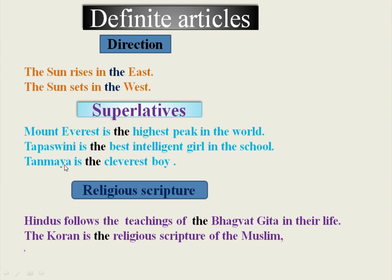'Tanmaya is the cleverest boy' — 'cleverest' is the superlative degree. We also use the definite article before religious scriptures. Every religion has its own scriptures. Hindus have the Puranas, Vedas, and Bhagavad Gita. Muslims have the Koran. Christians have the Bible. Sikhs have the Guru Granth Sahib. We use the definite article before all names of religious scriptures. 'Hindus follow the teachings of Bhagavad Gita.' 'The Koran is the religious scripture of the Muslims.'